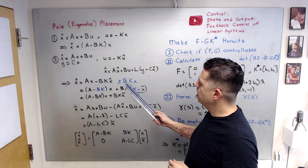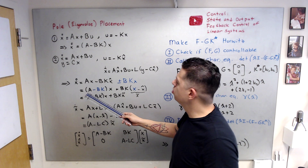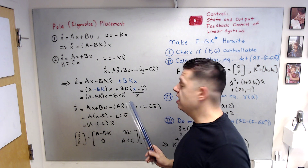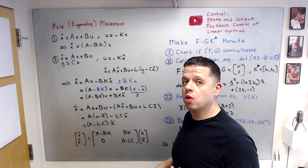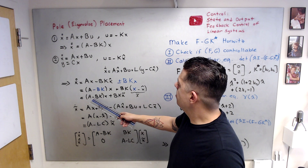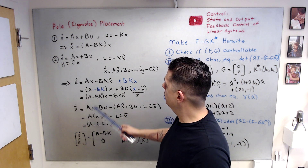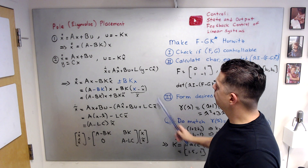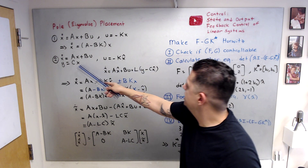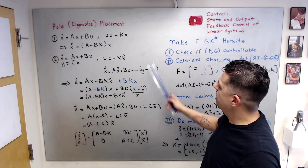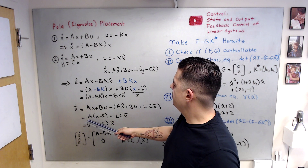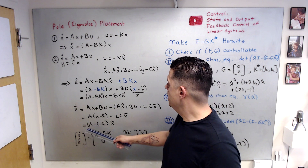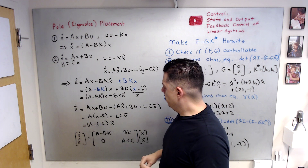Adding and subtracting BKx and grouping terms gives x_dot = (A - BK)x + BK(x - x_hat). Since x_tilde = x - x_hat is the estimation error, this becomes x_dot = (A - BK)x + BK·x_tilde. For x_tilde_dot, subtracting the observer equation from the plant equation and noting that L(y - Cx_hat) = LC·x_tilde, the Bu terms cancel, yielding x_tilde_dot = (A - LC)·x_tilde.